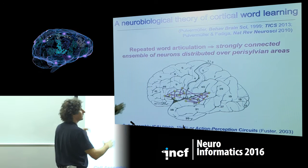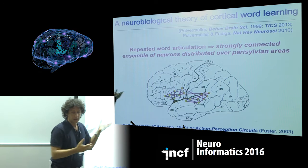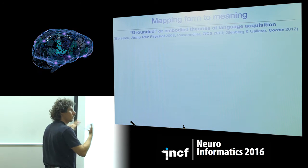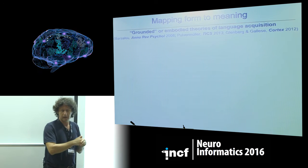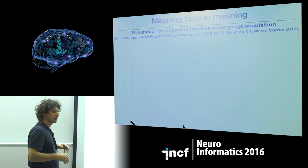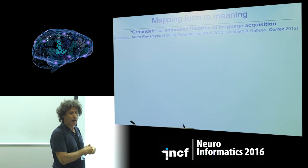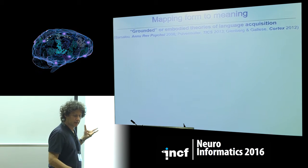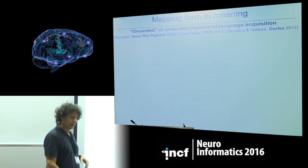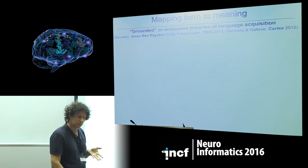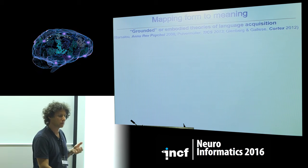The idea is that these sets of cells are strongly and reciprocally connected and emerge as a result of Hebbian learning. What I mentioned covers the emergence of a circuit associating articulation with auditory sound perception, but I haven't said anything about meaning. By the same Hebbian learning mechanism, we take the view that language acquisition is grounded in sensory motor experience.